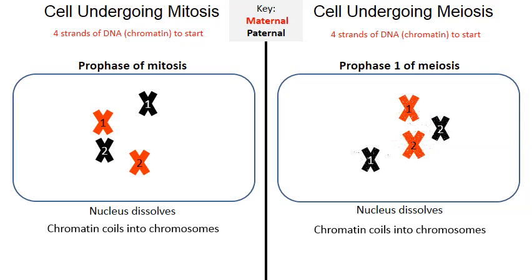Notice how there are two chromosome number ones — one in red that you inherited from your mother and one in black that you inherited from your father. There are also two chromosome number twos. Now in humans there are 46 chromosomes, so there are two chromosome 12s, two chromosome 21s, two chromosome 19s, and so on. For simplicity I just drew a cell with four total chromosomes.